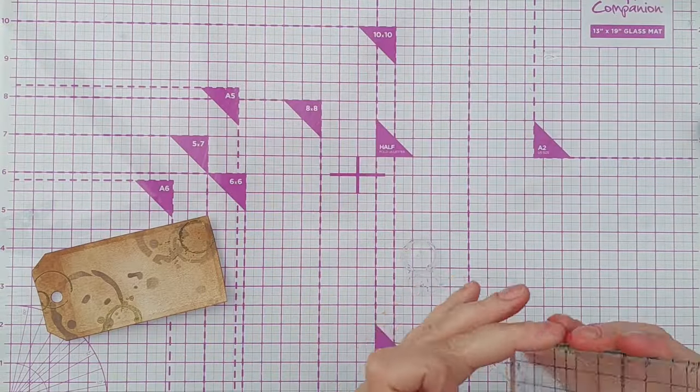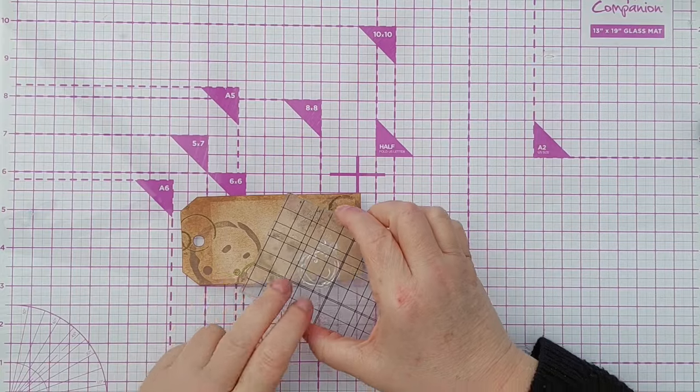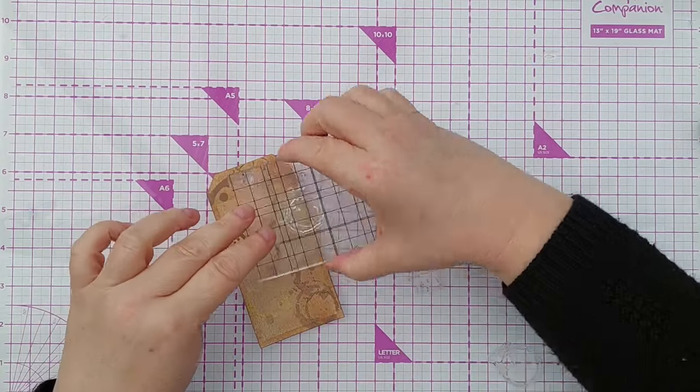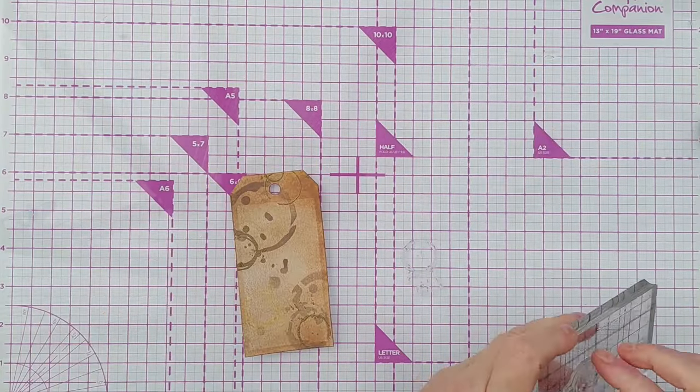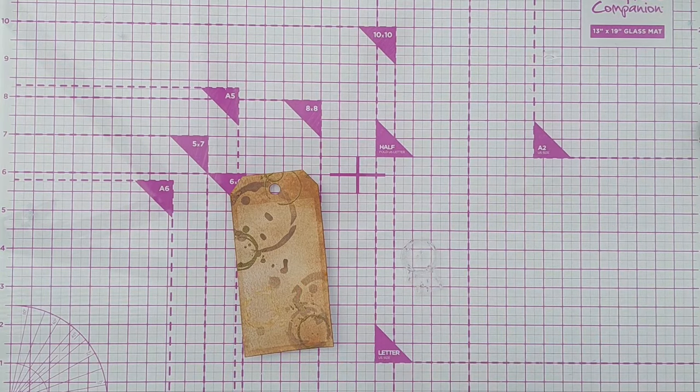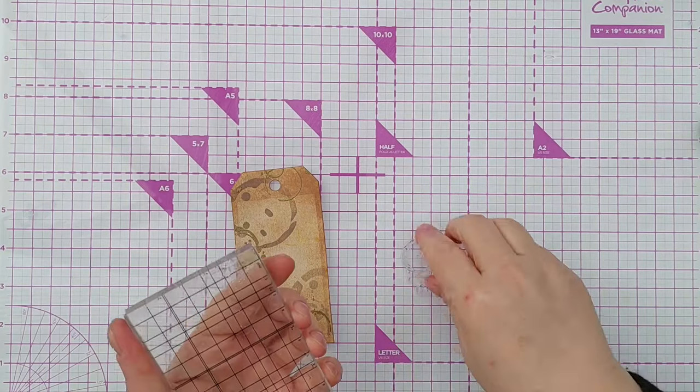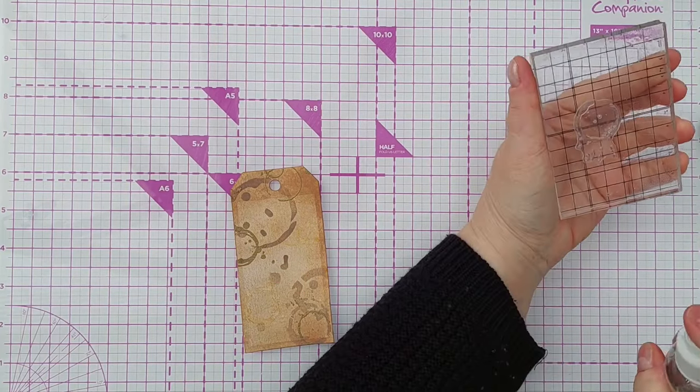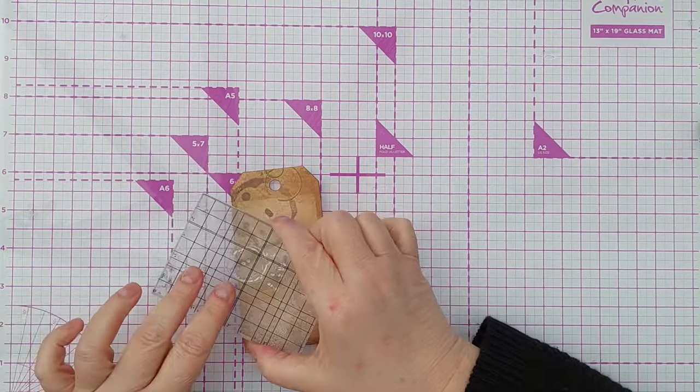And then I decided to add some splotchy watermarks. But instead of splashing on water like I often do, I took the stamps that I'd previously used and spritzed them with water and then stamped them down onto the tag, and this left some watery coffee ring marks.